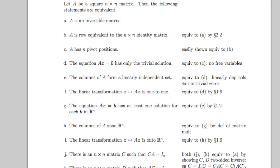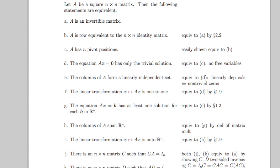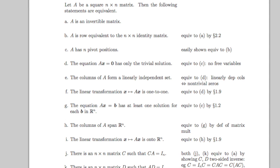The equation AX equals zero has only the trivial solution. The columns of A form a linearly independent set. A has n pivot positions.